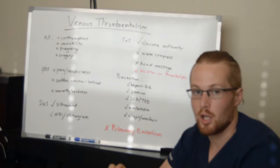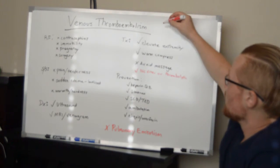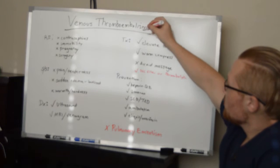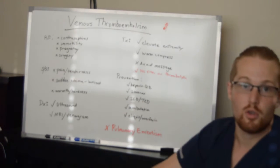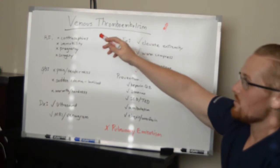A thrombus means a blood clot that has stayed right here in the vessel. An embolism means that blood clot or that thrombus has now begun to move. And venous meaning it's in a vein.